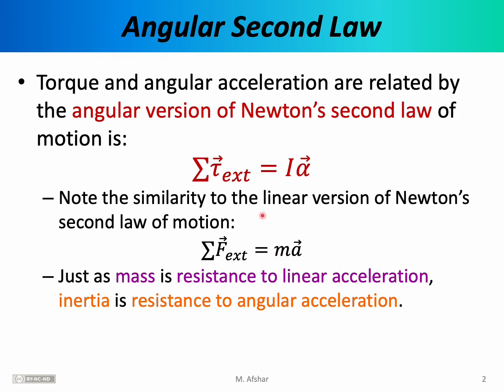Of course, mass has been replaced by the moment of inertia. That makes sense — mass tells you how much an object resists linear acceleration, in other words, how difficult it is to push an object. Moment of inertia does the same thing but for angular acceleration: an object with a larger moment of inertia will be more difficult to angularly accelerate. Linear acceleration has also been replaced by angular acceleration, and force has been replaced by torque.